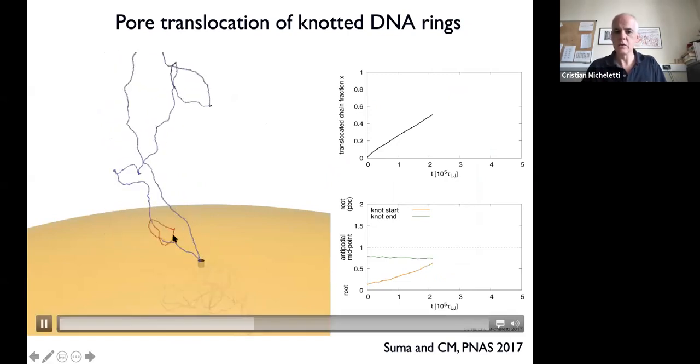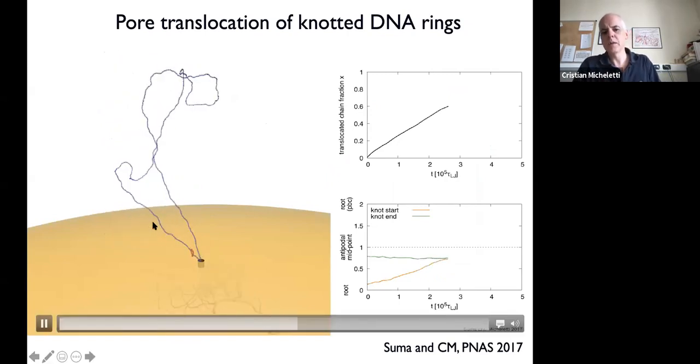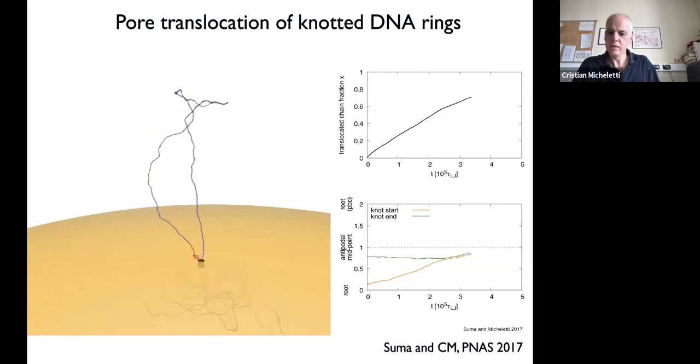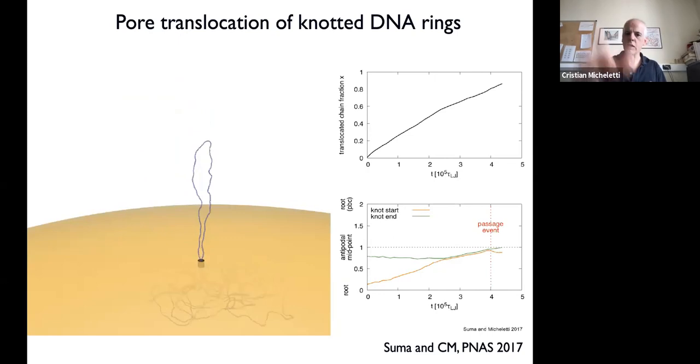The knotted region is red. You can see what happens. It tightens a lot before entering. It makes a few attempts to enter the pore. Eventually it goes through, and when it goes to the other side it opens up.